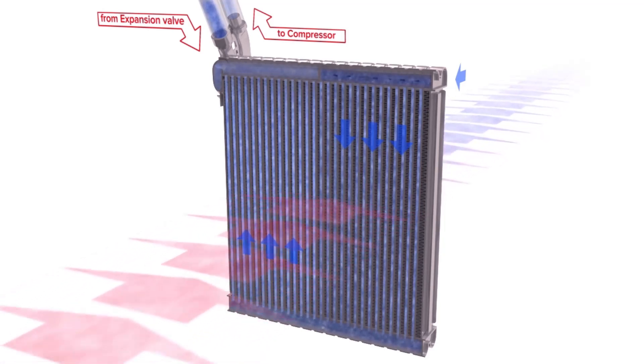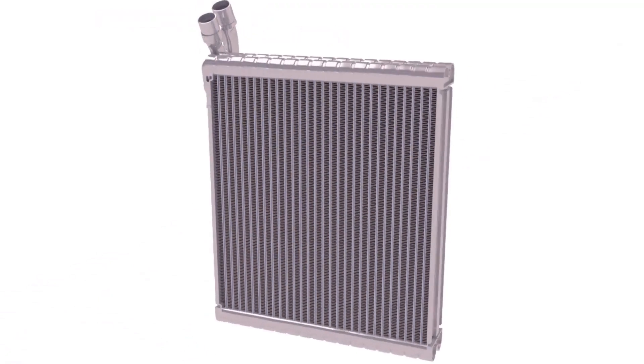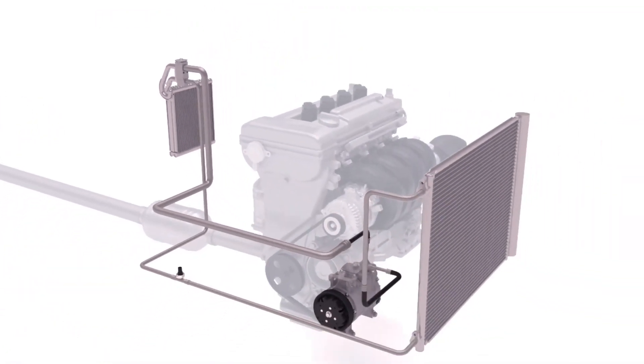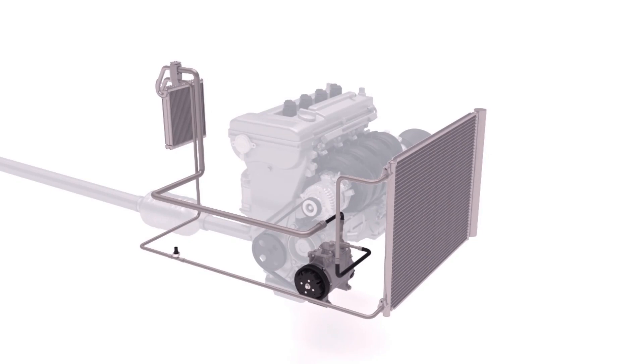This superheated gaseous refrigerant then flows from the evaporator and back to the compressor, where the whole process starts again. We call this whole process the refrigerant cycle.